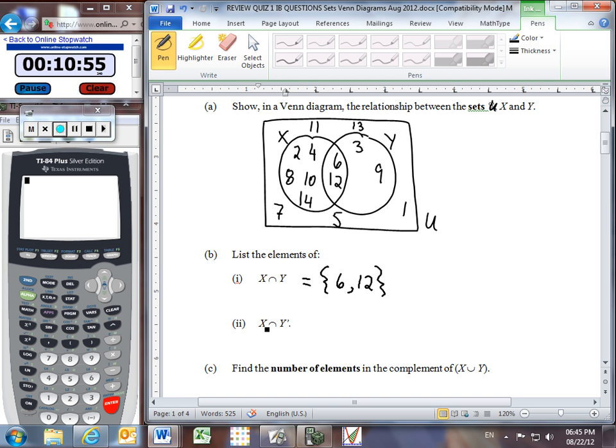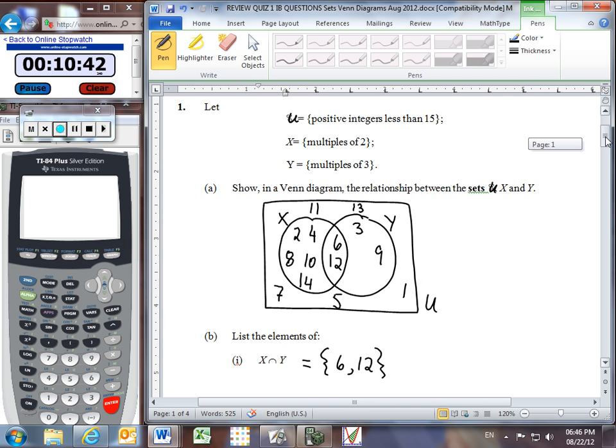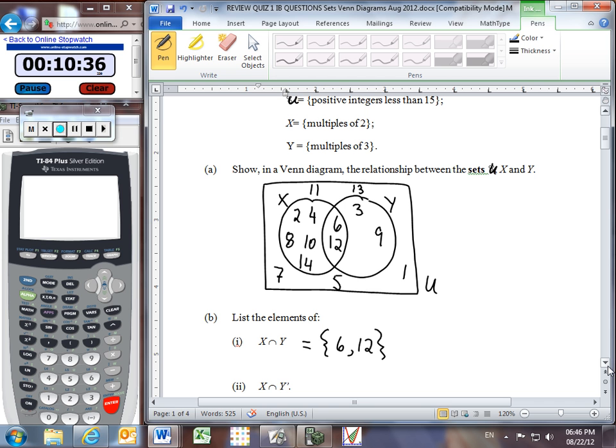What about X intersect Y not? So in words, we're talking about all of the elements that are in set X but are not in set Y. Or if you want to think in terms of our original words, we're looking at all of the positive integers that are multiples of 2 but are not multiples of 3. Well you might realize then that this involves all of these numbers. These are the numbers that are multiples of 2, they are inside circle X, but at the same time they are not inside circle Y.